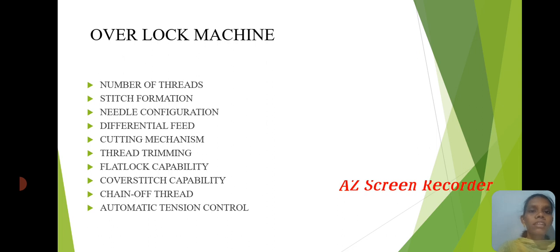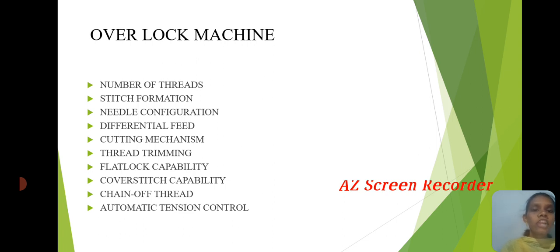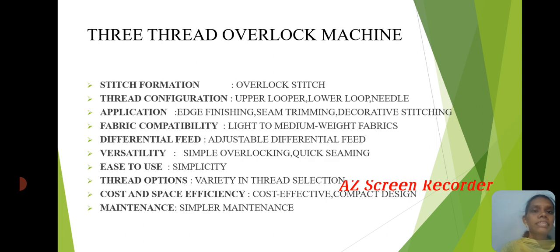Overlock Machine. Key properties include: number of threads, stitching formations, needle constructions, differential feed, cutting mechanism, trimming threads, flat lock capability, convertible capability, chain of threads, and automatic tension control.